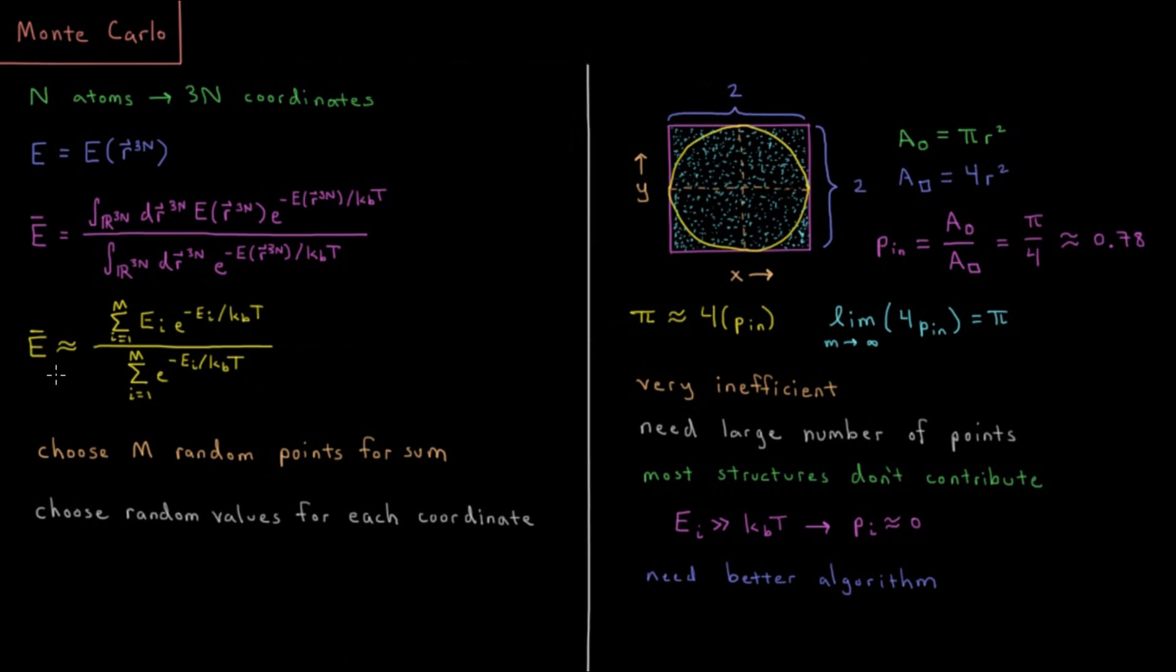And this is an alternative approach called Monte Carlo where instead we're going to approximate this integral as a sum over a finite set of points. Where we sum over some M configurations of the energy of each configuration times Boltzmann factor and then divide by a sum of the Boltzmann factors. So in general we could choose any set of points here.